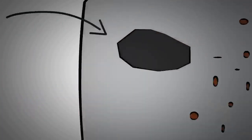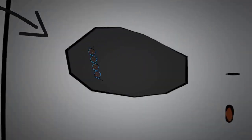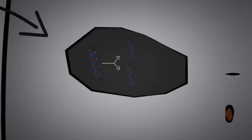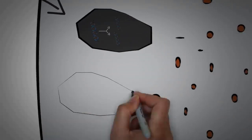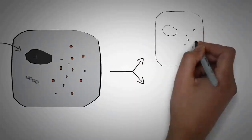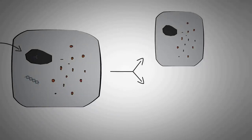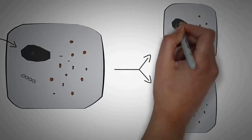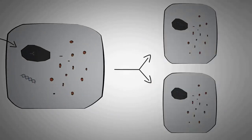DNA replication takes place inside the nucleus of the cell, where two identical new copies of the DNA are synthesized from the original DNA. The newly formed set of DNA will then be transferred to the future nucleus produced during cell division. At the end of cell division, we have two completely new cells, each having its own set of DNA.